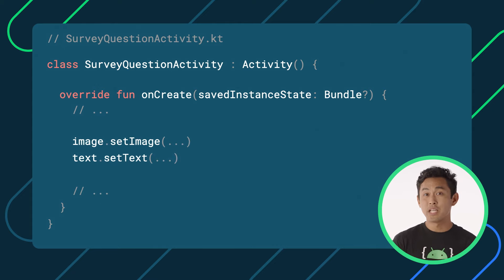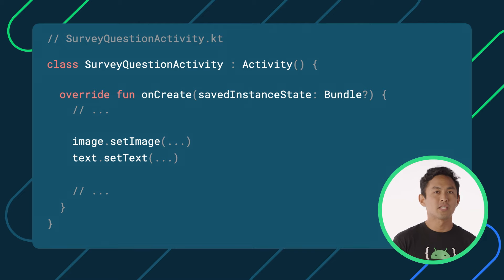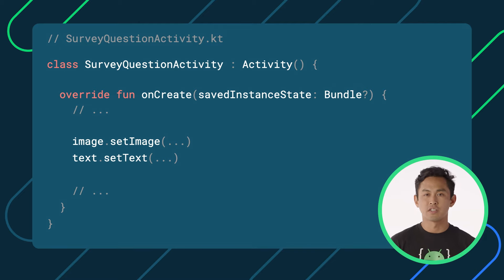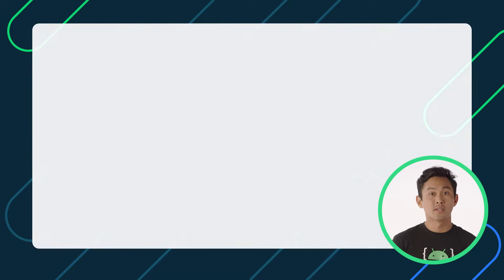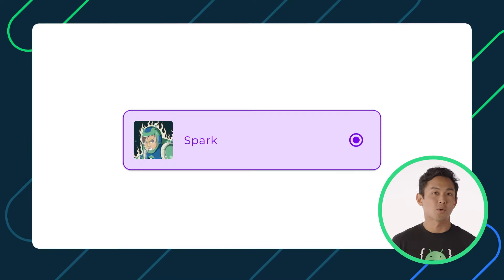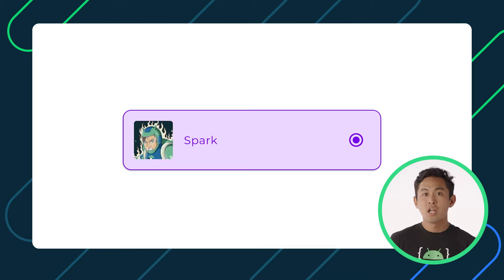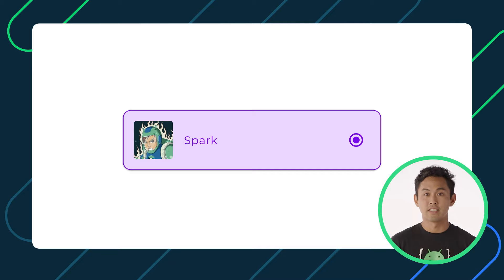After obtaining references, we would then mutate each View by calling setter functions, like setImage or setText, to display the desired UI state. When state changes — for example, when a user selects an answer — the View that was interacted with would appear selected.